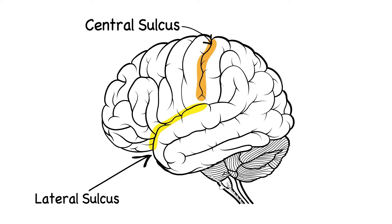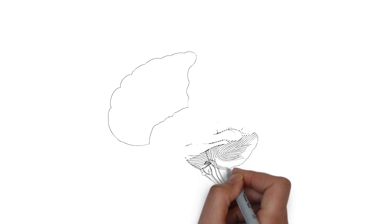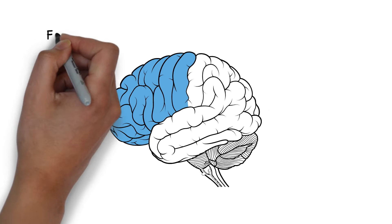The consistency of the central sulcus and lateral sulcus across human brains help to give rise to the concept of lobes. At the front is the frontal lobe.